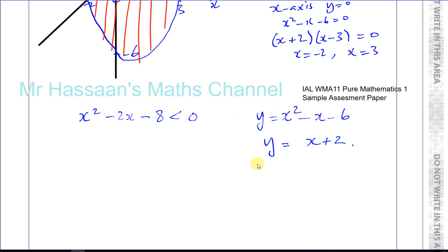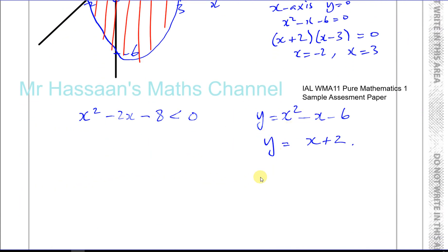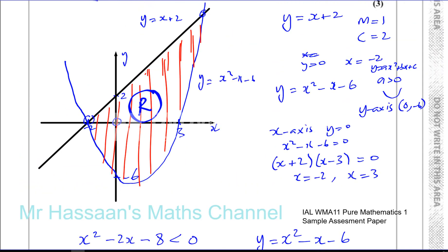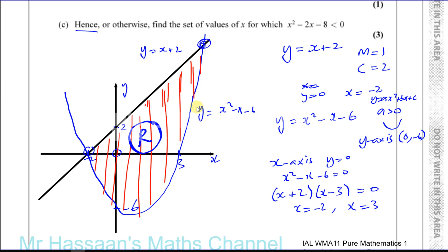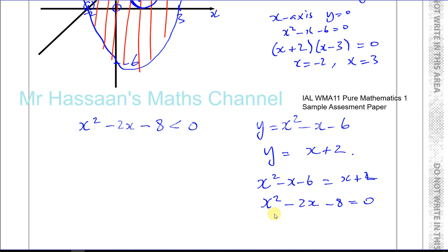The points where the line and the curve intersect are the solutions to the equation where we set them equal: x squared minus x minus 6 equals x plus 2. Rearranging by bringing everything to one side gives x squared minus 2x minus 8 equals 0. So where these two graphs are equal to each other — at x equals minus 2 and the other intersection point — are the solutions to this equation.